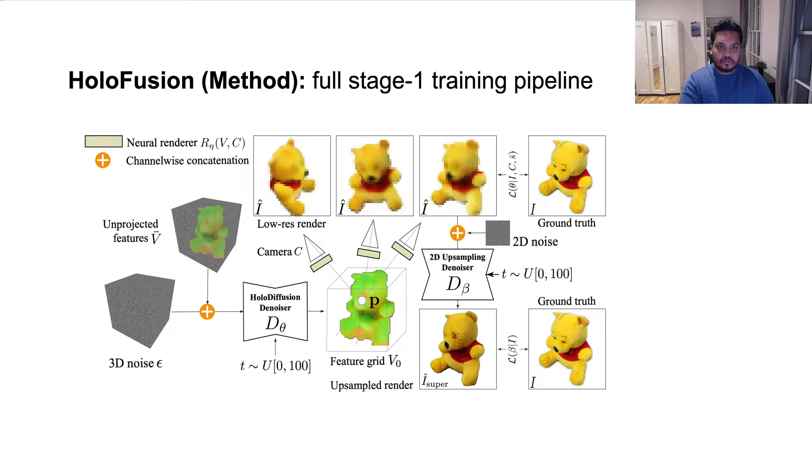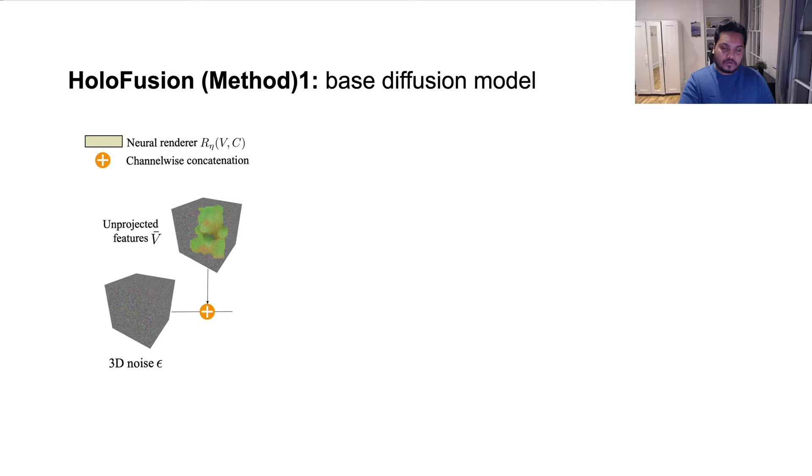we construct an approximate 3D feature voxel grid V-bar using the source views. Slightly different from the HoloDiffusion method, we concatenate these V-bar features with the 3D noise for the first pass of the denoising instead of adding them together.